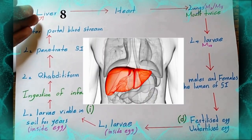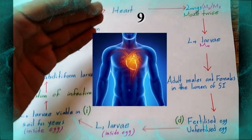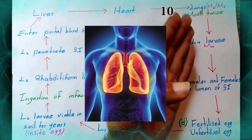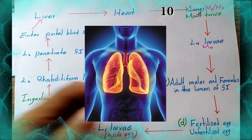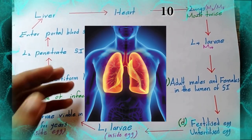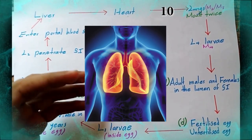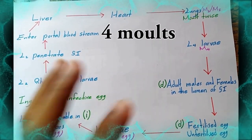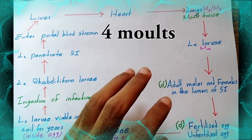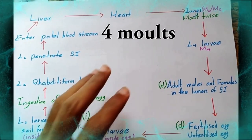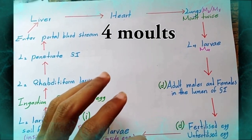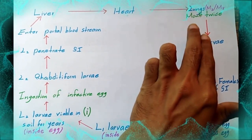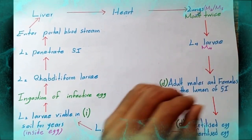After penetrating the small intestine, larvae enter the portal bloodstream, then migrate to the liver, after that the heart, and then the lungs. Ascaris lumbricoides has a lung migratory phase. There are molts that occur in Ascaris lumbricoides — molting occurs twice in the lung.